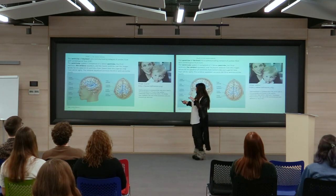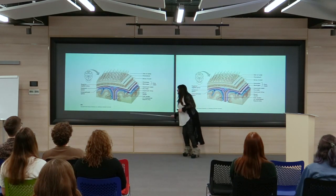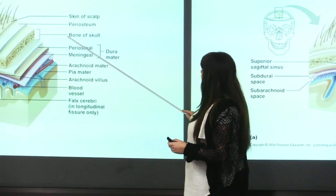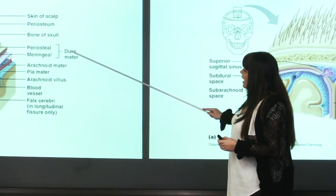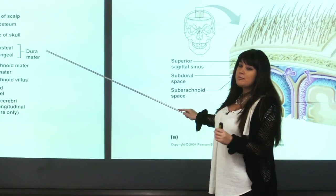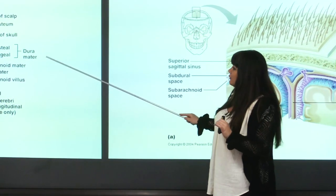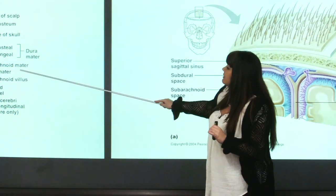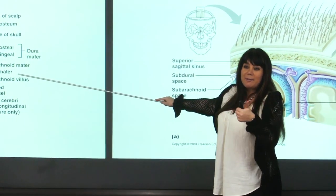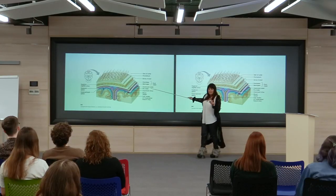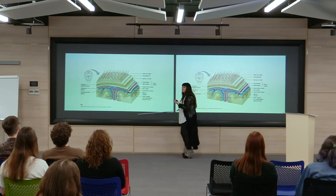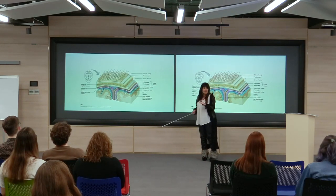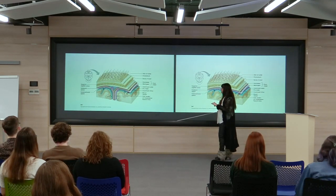Here in this slide, you can see the skin, then the bone of the skull, and then three important membranes. These are called meninges. The first one is the dura mater, the second is the arachnoid mater, and the third is the pia mater. These three membranes are encapsulating, protecting, and supporting the brain.